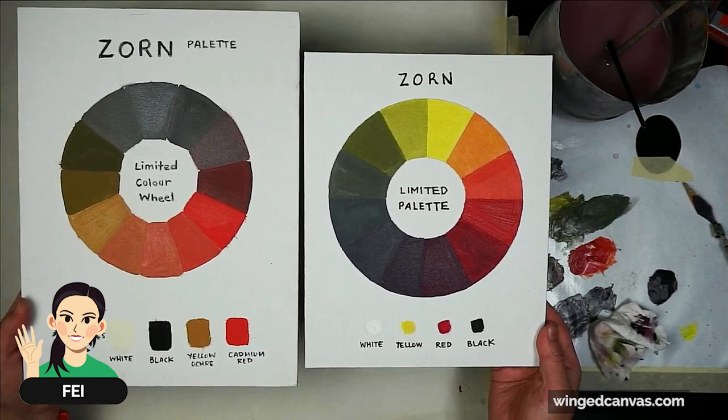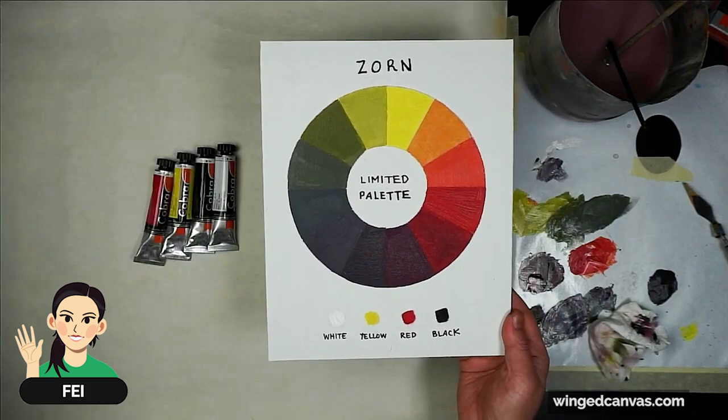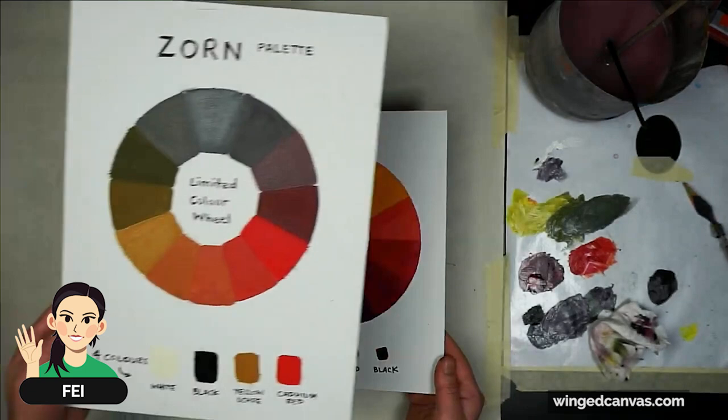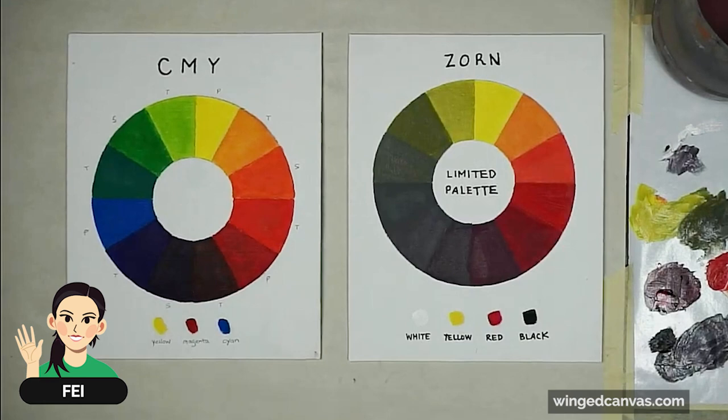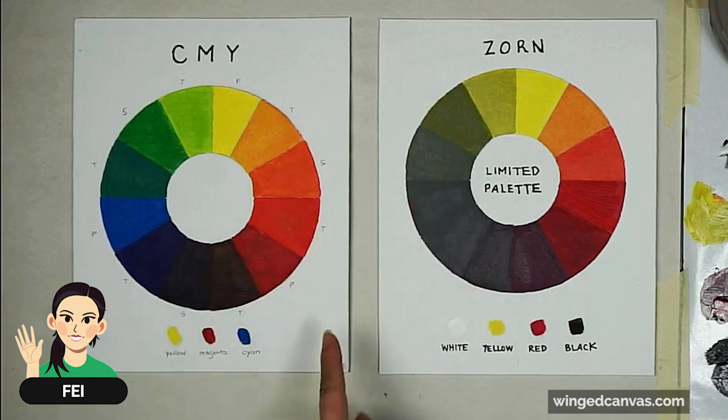Both of them are the Zorn palette, except you can switch up your red and your yellow. If you use a brighter red and a brighter yellow, you're going to get brighter range of colors. If you use a duller red and a duller yellow, like yellow ochre, then you will get less of a range. Last color palette, if you want to compare, is our CMY color palette, which uses a blue. You can see that limiting this color will make it a lot more subtle.